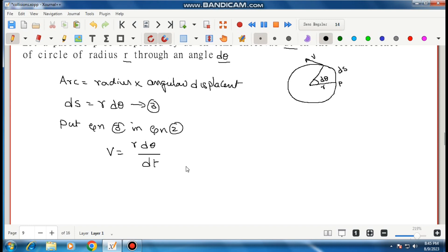But from equation one, d theta by dt equals omega. So replace d theta by dt by omega. Therefore, v equals r omega.